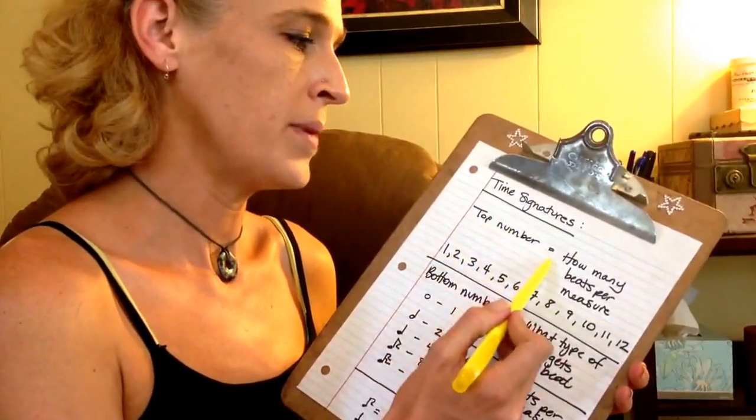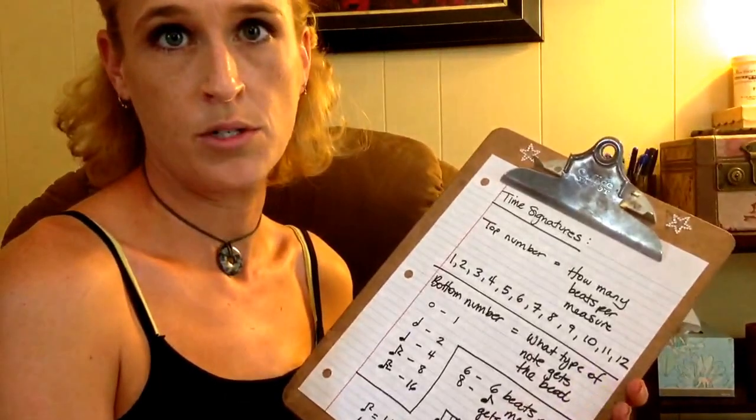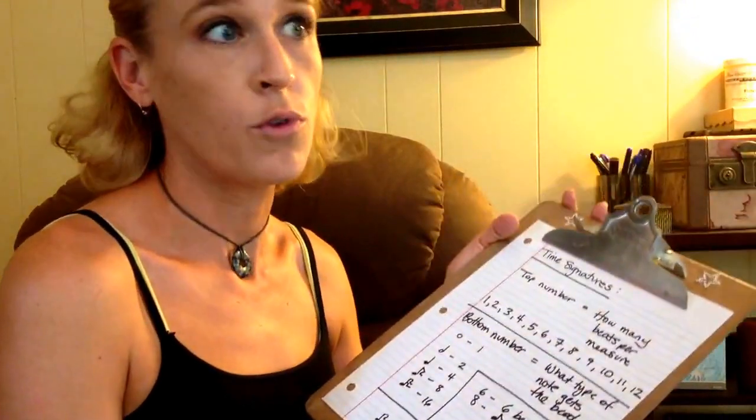The top number means how many beats per measure. This can range from 1 to 12, and it's pretty straightforward. So if you have 4/4 time, the top number is 4, which means there are 4 beats per measure.